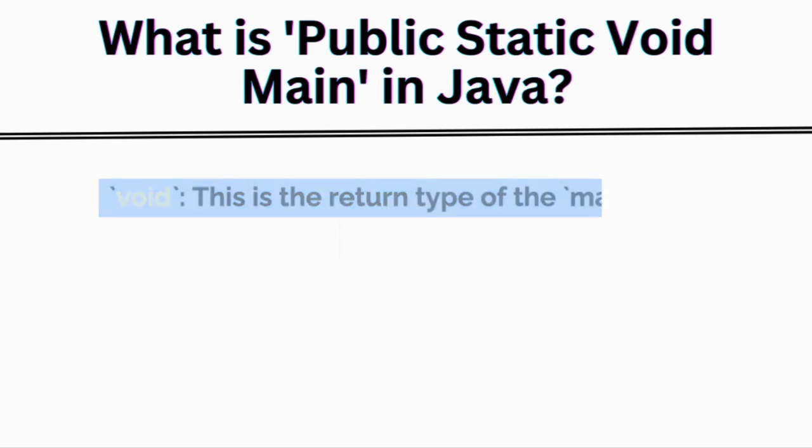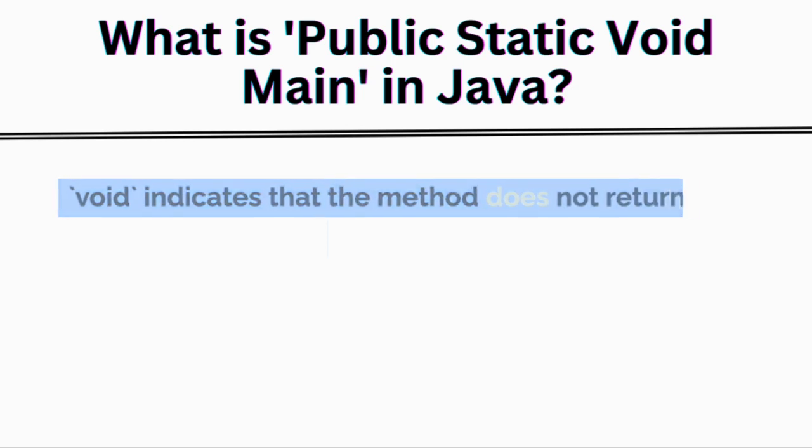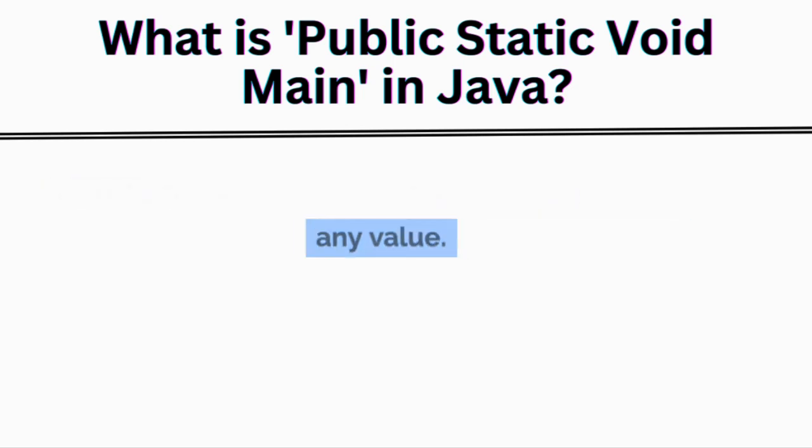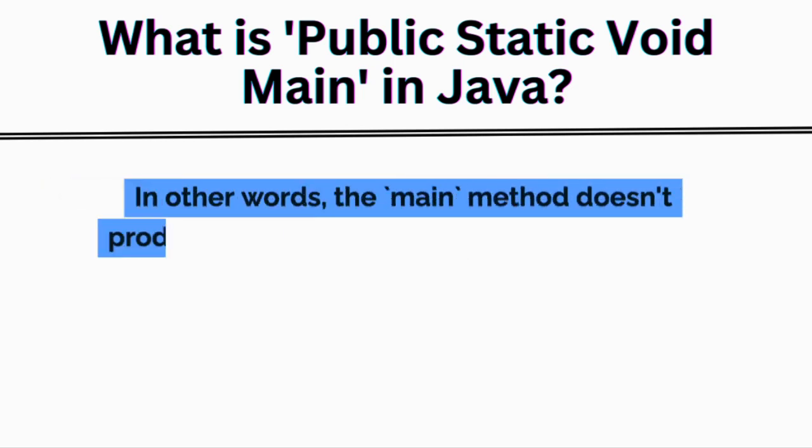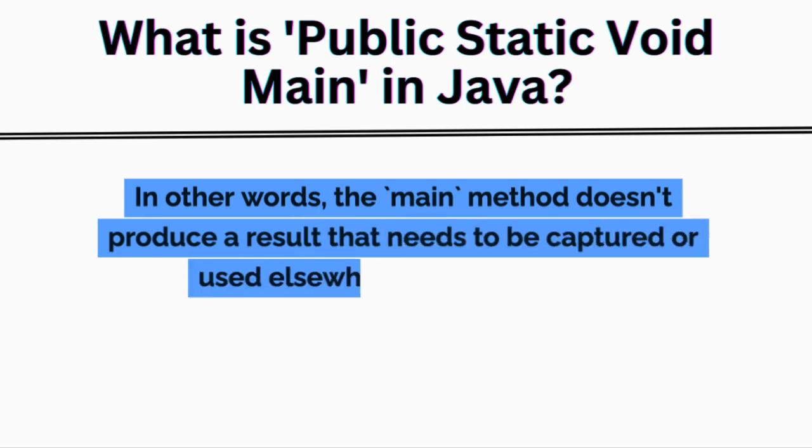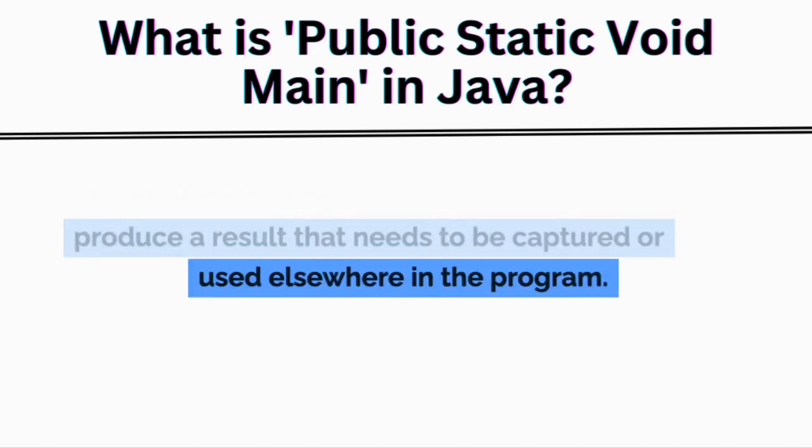Void is the return type of the main method. Void indicates that the method does not return any value. In other words, the main method doesn't produce a result that needs to be captured or used elsewhere in the program.